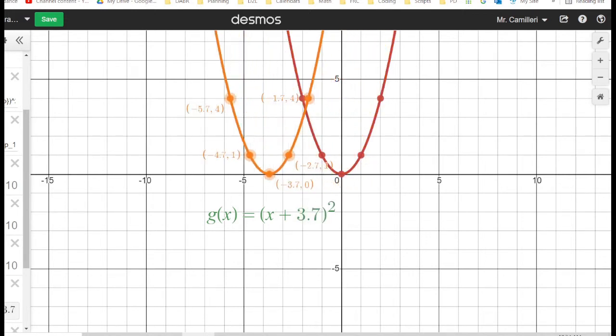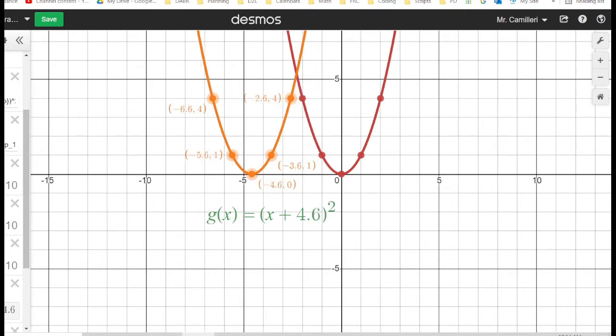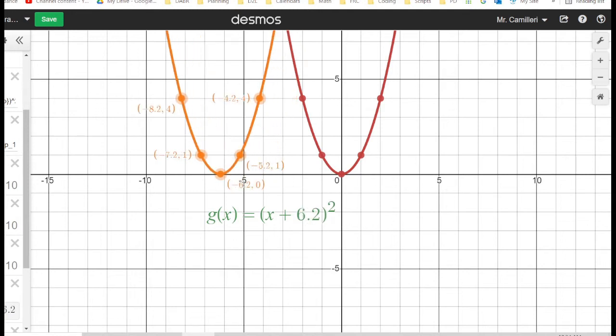We see that the relation and the points on the relation are moving to the left, and we see the x-coordinate of the points on the relation decreasing. Why is this happening?